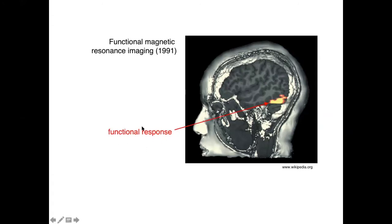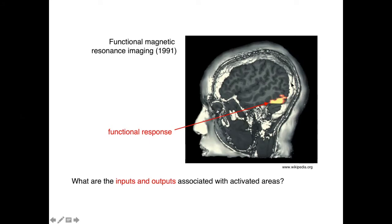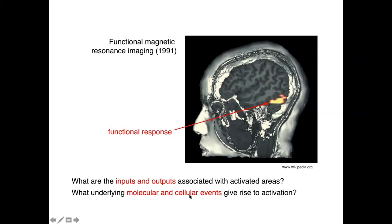In some ways, the ability to identify these functional responses still fails to address the fundamental question: how does the outside world get into our heads, prompt us to do things, and ultimately elicit behavior? When we look at functional responses using fMRI, what we're often missing is information about the inputs and outputs associated with the activated areas — something happened here, how did it come about, where is it going? We also don't know about the underlying molecular and cellular events. Although we have increasing recourse to invasive techniques that can be used in animals, at a whole brain level these questions are still, for the most part, out of reach.